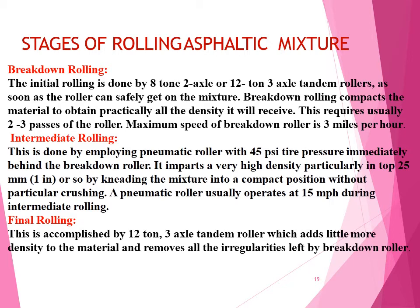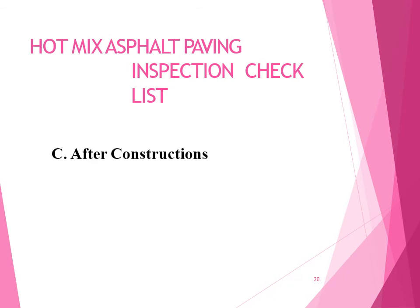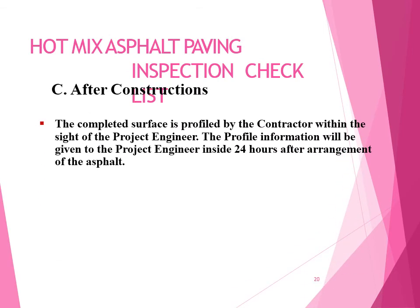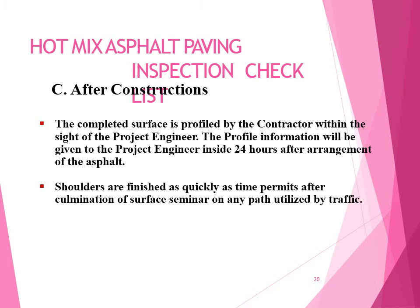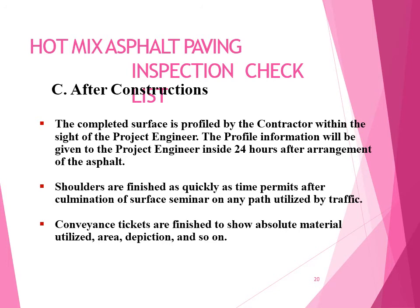Final rolling is accomplished by a 12-ton 3-axle tandem roller, which adds a little more density and removes all irregularities left by construction. The completed surface is profiled by the contractor within the site of the project engineer. Profile information is given to the project engineer within 24 hours after placement of the asphalt. Shoulders are finished as quickly as possible after completion of the surface course. Delivery tickets are completed to show total material used, area, and disposition.